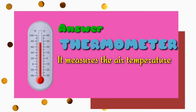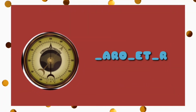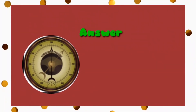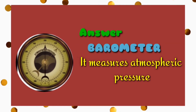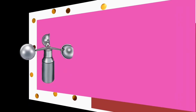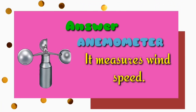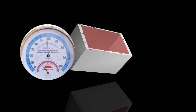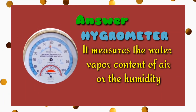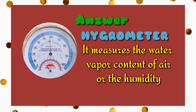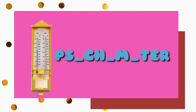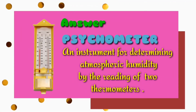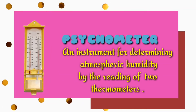Name the instrument. A thermometer measures air temperature. Name the instrument — a barometer measures atmospheric pressure. Name the instrument — a psychrometer is an instrument for determining atmospheric humidity by the reading of two thermometers. What does the instrument measure? Water vapor in the air, or humidity.